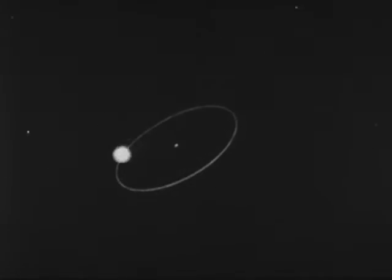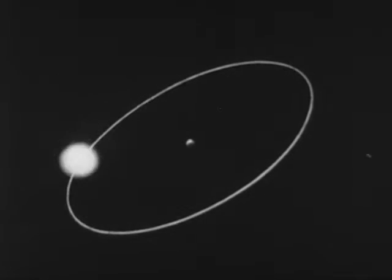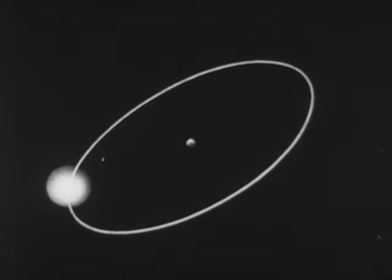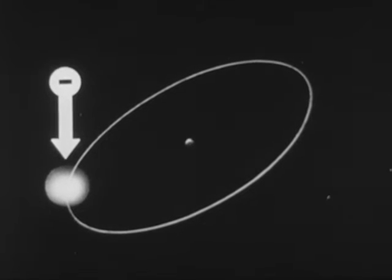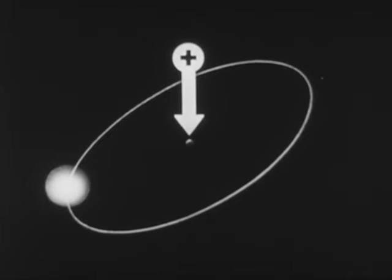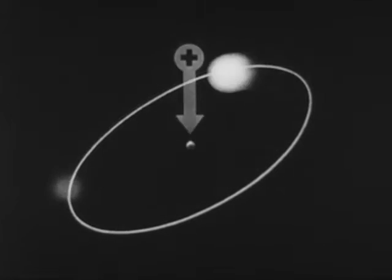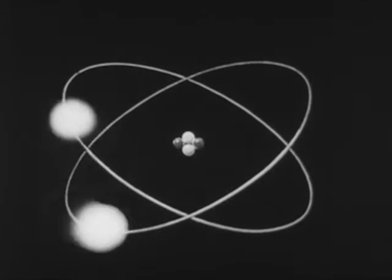Within these molecules we would find atoms — the hydrogen atom, for example, the simplest atom in nature. It consists of two parts: one is a light particle with a negative electrical charge called an electron; the other is a nucleus consisting of a heavy particle with a positive electrical charge called a proton. Almost all the weight of the atom is in the proton, which weighs almost 2,000 times as much as the electron.